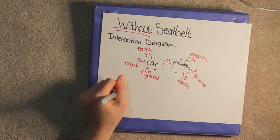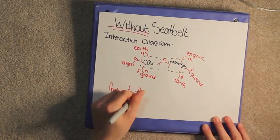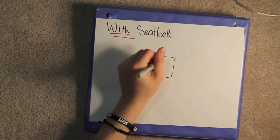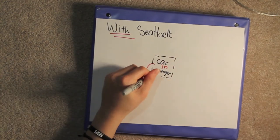F net X is equal to F A minus F F. When the passenger does have a seatbelt, he and the car are in the same system.